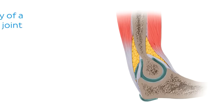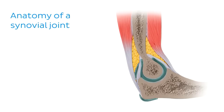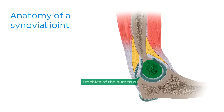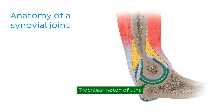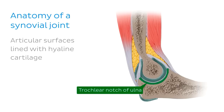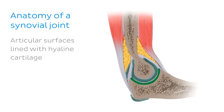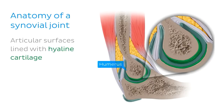The classic example of a synovial joint is the elbow. The image on screen is a sagittal section through the arm, elbow, and forearm. We can see the trochlea of the humerus and, distal to that, the trochlear notch of the ulna. Revisiting our first criteria, the articular surfaces must be lined with hyaline or articular cartilage — we can see this cartilage on both the humerus and the ulna.